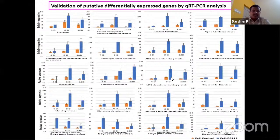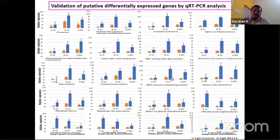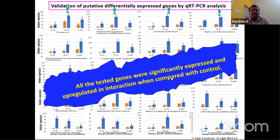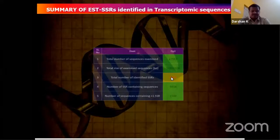To verify the reliability of the RNA-seq data, real-time PCR analysis was performed on selected putative genes. All genes tested showed significantly higher expression in the interactions, in complete agreement with the RNA-seq data.